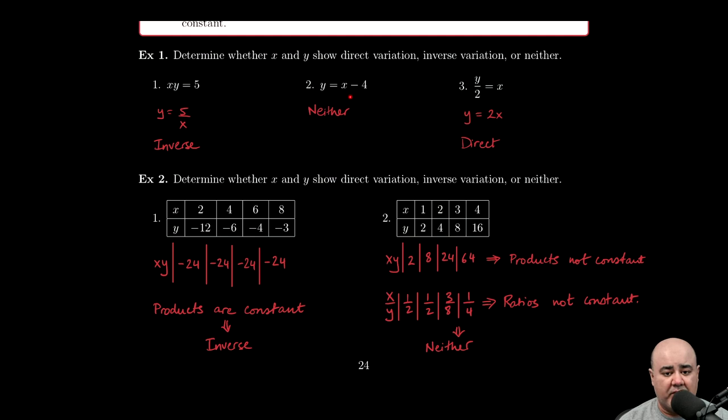In the second example, y is already solved for: y = x - 4. This does not fit y = a/x or y = ax. It doesn't fit either of those forms, so we say that this is neither direct nor inverse variation.